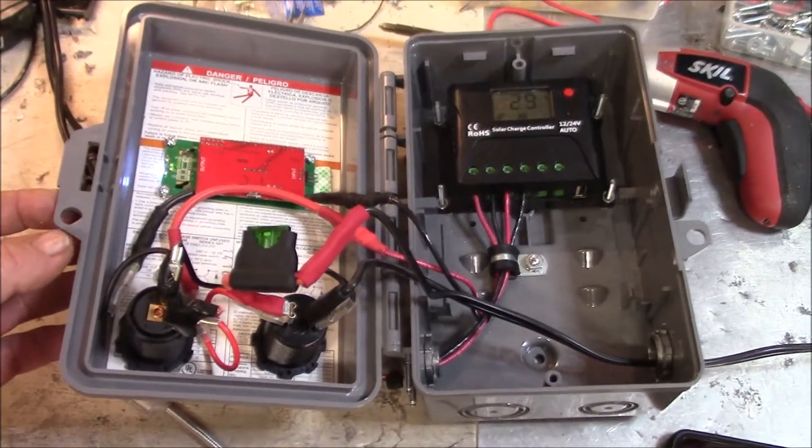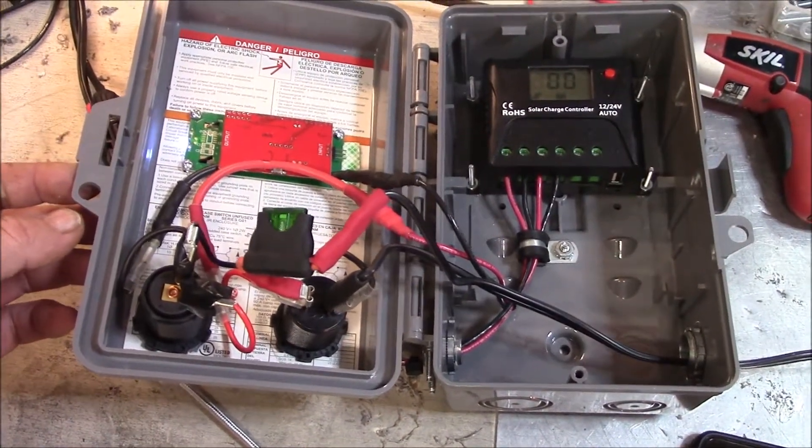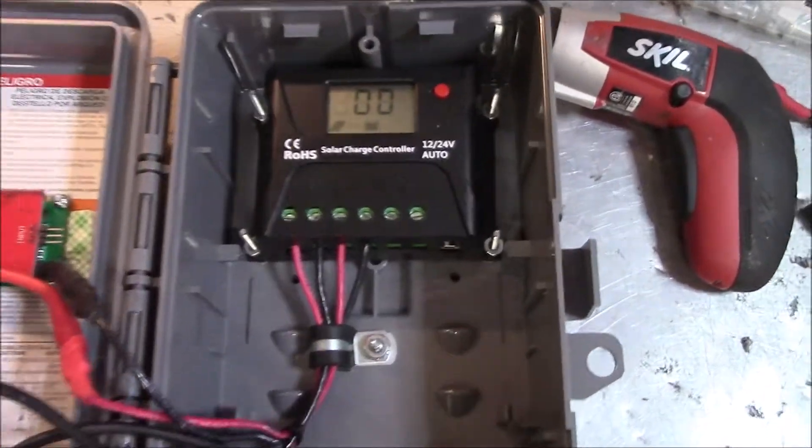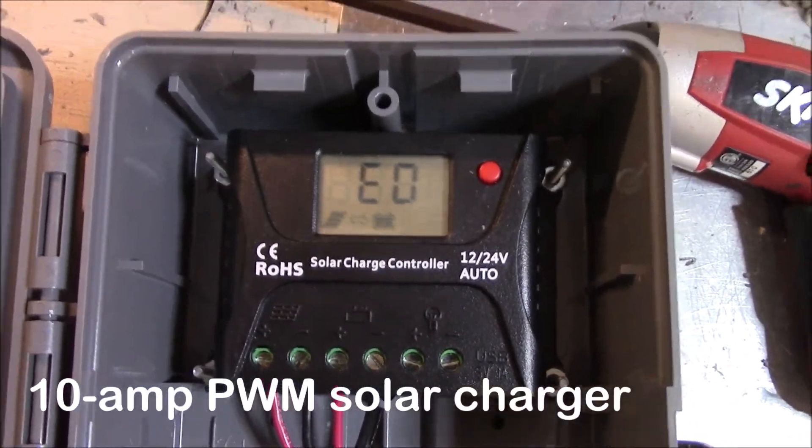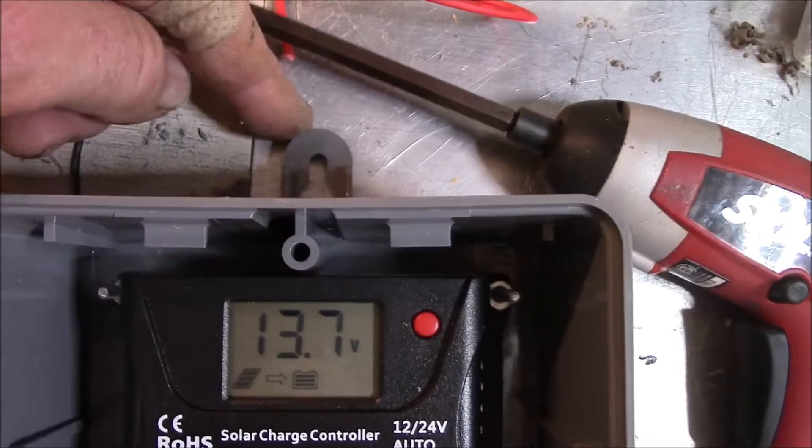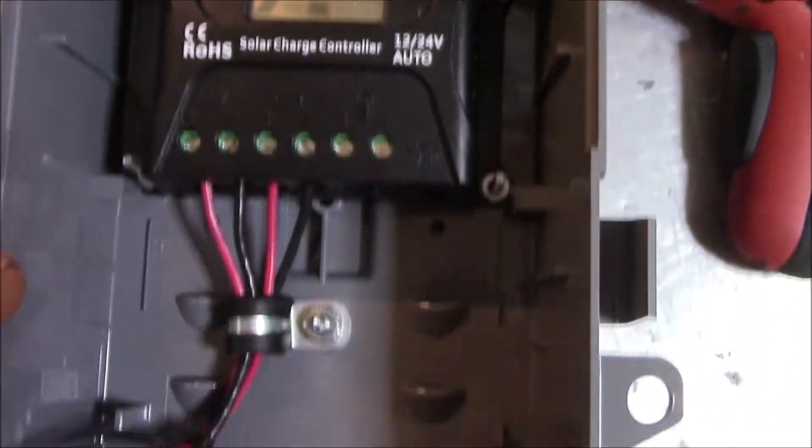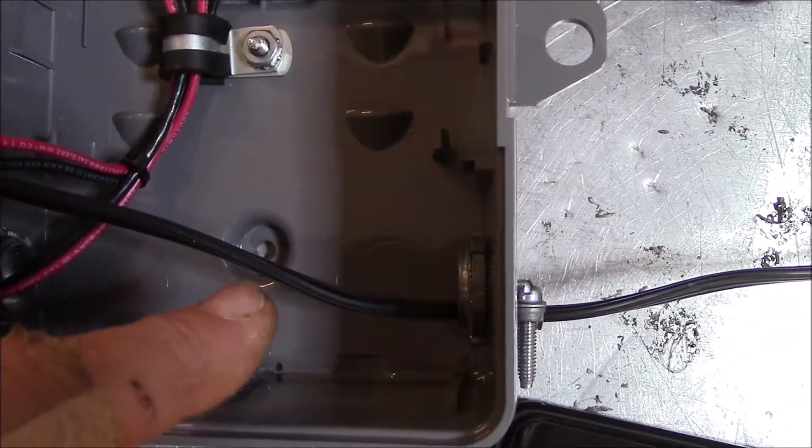That display, that power analyzer is on the battery side. It's not analyzing what the solar is. But what it does is tell you how much power is going into the battery via the solar charge controller.